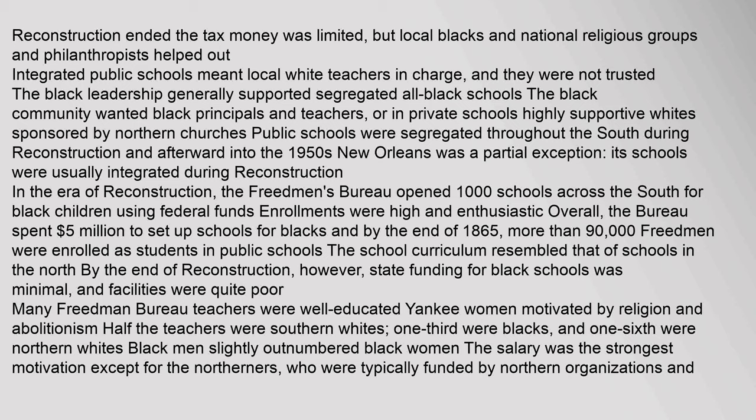After Reconstruction ended, tax money for black schools was limited, but local blacks, national religious groups, and philanthropists helped out. Integrated public schools meant local white teachers in charge, and they were not trusted. The black leadership generally supported segregated all-black schools with black principals and teachers, or in private schools, highly supportive whites sponsored by northern churches. Public schools were segregated throughout the South during Reconstruction and afterward into the 1950s. New Orleans was a partial exception, with schools usually integrated during Reconstruction.